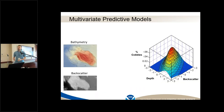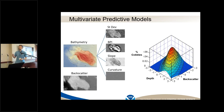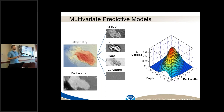Bathymetry and backscatter are common remote sensing variables we've talked about over the course of these two days. They allow us to create multivariate predictive models for different substrate types, but we can also use derivatives from those to add more information — calculating the standard deviation, the bathymetric position index (which is the relative elevation of a particular pixel in relationship to its neighborhood), the slope, and the curvature. These are all neighborhood statistics for a particular pixel and give us context for where that pixel is in space.